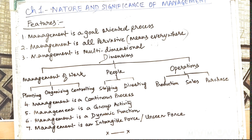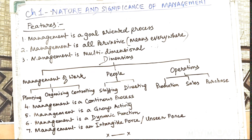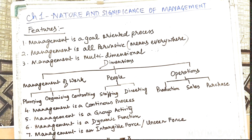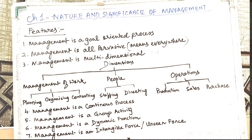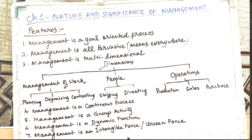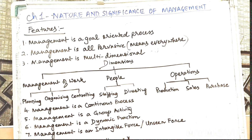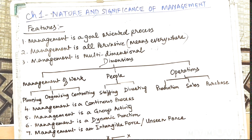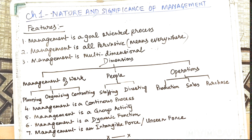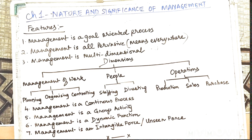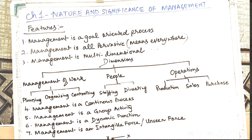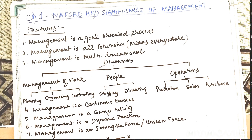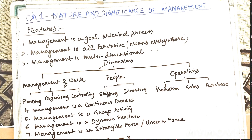The third one: management is multi-dimensional. You can see on the board there are different dimensions of management given — management of work, people, and operations. Work comprises planning, organizing, and controlling; people consists of staffing and directing. These five are the five functions of management as mentioned in the previous class. Operations are the different activities carried on in an office or factory, such as production, sales, purchase, etc.